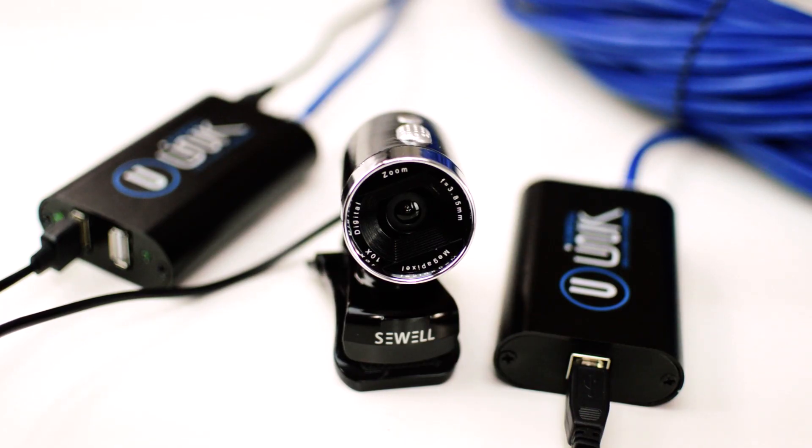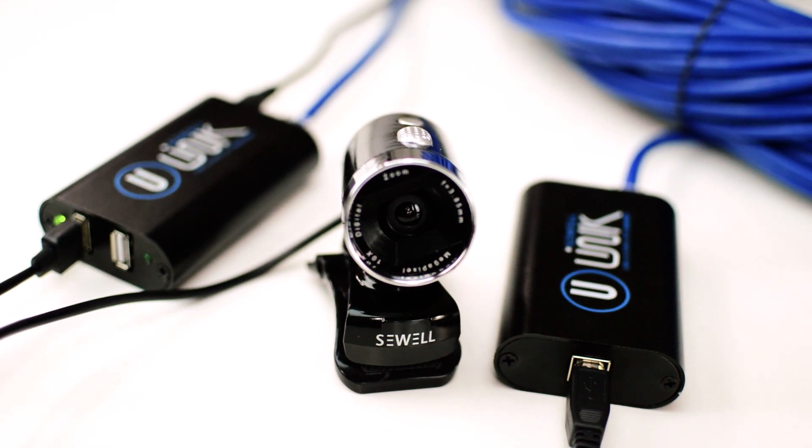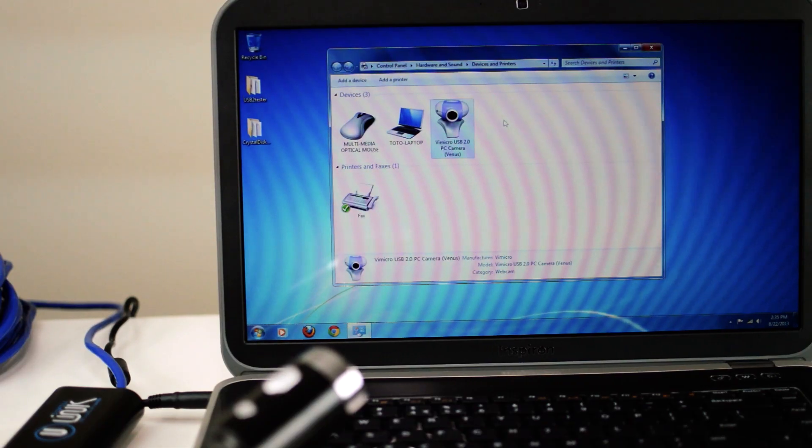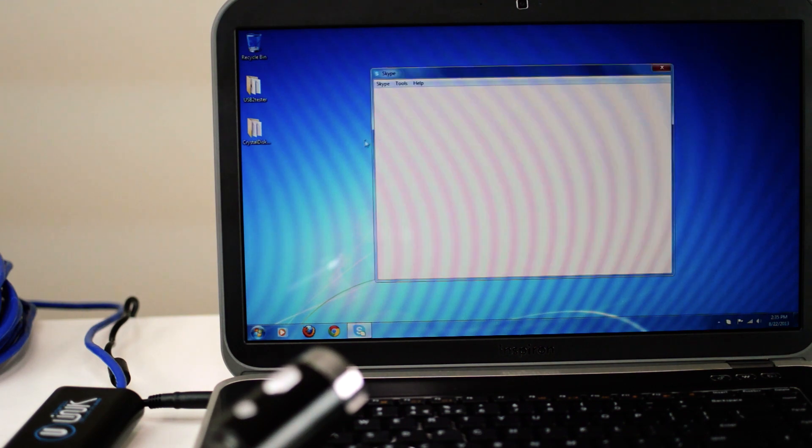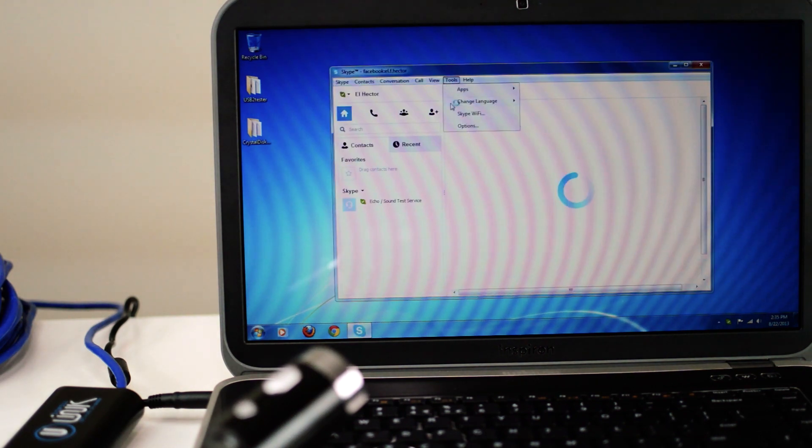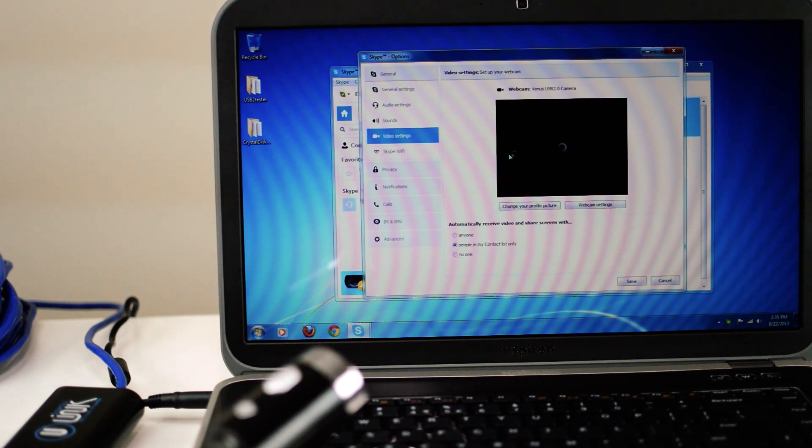Now we plug in this USB 2.0 Sewell HD webcam. When we check on our list of devices, the computer can see it, so we can go onto Skype to test it. But we see that over 200 feet, it does not load the image.